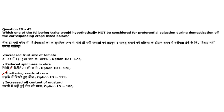Next: which of the following traits would hypothetically NOT be considered for preferential selection during domestication of the corresponding crops? Increased fruit size of tomato — yes, selected. Reduced spininess in okra — yes. Shattering of seeds in corn — no, this is not a preferred trait for domestication. Increased oil content in mustard — yes. The answer is option 3.